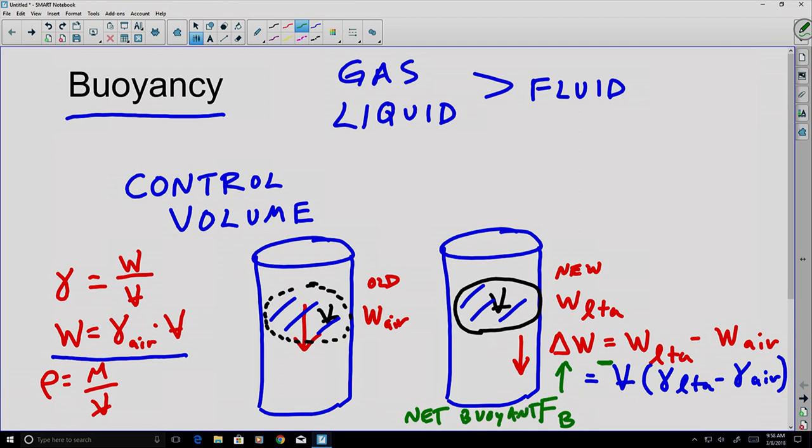Our net buoyant force FB, which, if I rewrite it, is the volume times, now notice I'm going to switch the signs here, so I'm going to start with the specific weight of the air. And I will subtract off the specific weight of whatever is lighter than air.